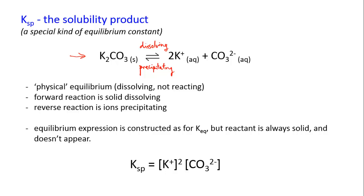To write the equilibrium expression for a solubility equilibrium, you do it exactly the same way as for any other equilibrium. The thing to remember is that the reactant is always a solid — the salt that's dissolving — and because of the rule that we ignore solids and pure liquids, it doesn't appear in the equilibrium expression.